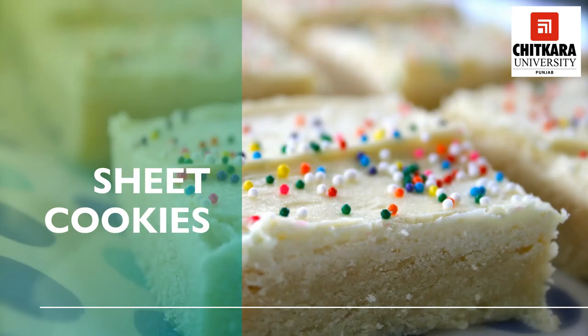Sheet cookies: Many chefs confuse these cookies with bar cookies. There are various methods of preparing this type of cookie. In some cases, the dough is baked in sheets and cut later, while in some cases, they are lined on a tray and the topping is spread onto the base before being baked. Most of the popular sheet cookies are made by this method.